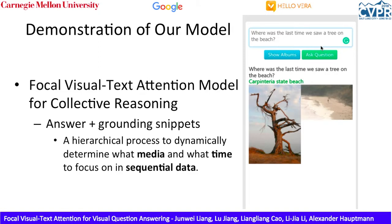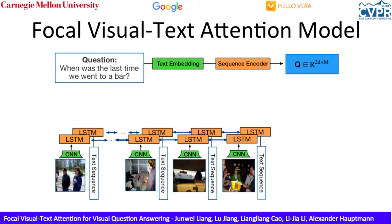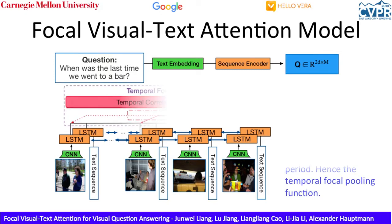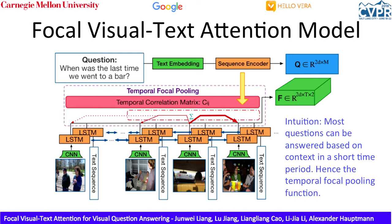Our FVTA model utilizes a hierarchical process to dynamically determine what media and what time to focus on in sequential data. It first encodes different sequences of information from different modalities using different LSTMs. Based on the intuition that most questions can be answered with context in a short time period, we use a temporal focal pooling function to summarize each time step's representation with relevant information in a small temporal window. The model produces the focal context representation, denoted as the F tensor.